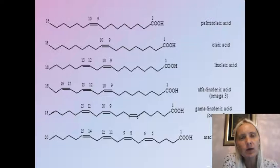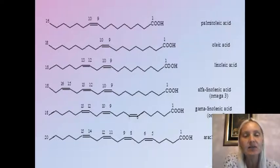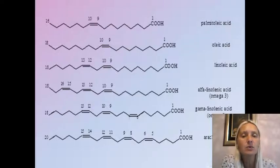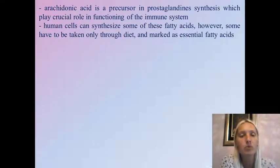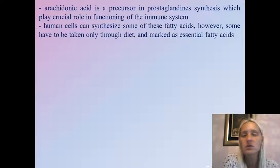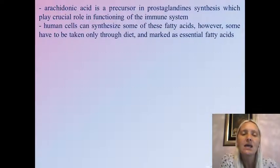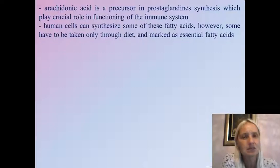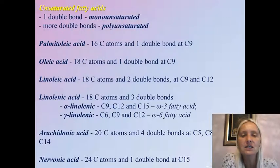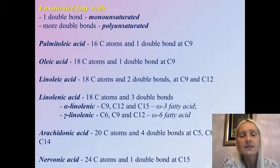Arachidonic acid is also worth mentioning, containing 20 carbon atoms and four double bonds at C5, C8, C11, and C14. It is a precursor for the synthesis of prostaglandins, from which immunoglobulins are synthesized, like IgG and IgM — which we all know so much about during the COVID-19 pandemic — and they play a crucial role in the proper functioning of the immune system. Nervonic acid, containing 24 carbon atoms and one double bond at C15, is a fatty acid found in nervous tissue.